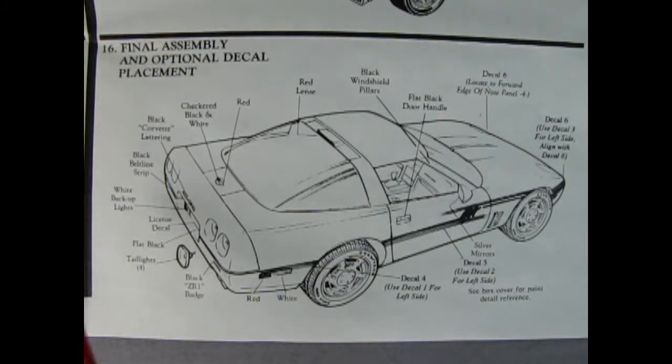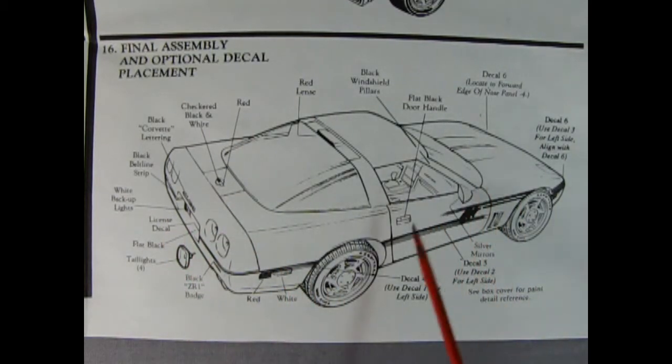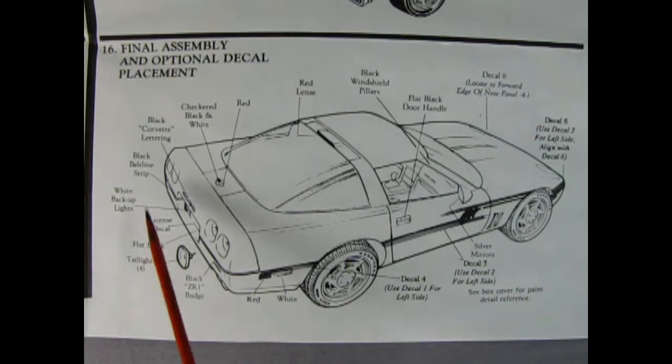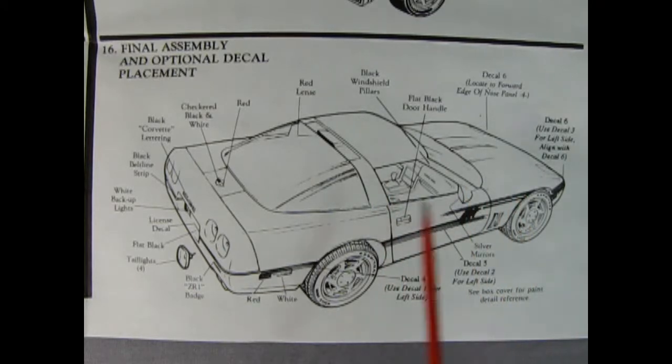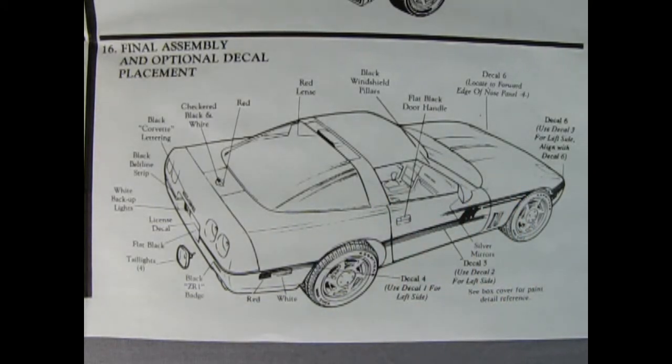Panel 16 shows our final assembly and optional decal placement. We also have our tail lamps popping into the back. There's all the decals and shows you just how to paint all the little side marker lamps and the Corvette logo and everything else. Now I can't wait to get my paws into those plastic parts. So take it away, Trevor.